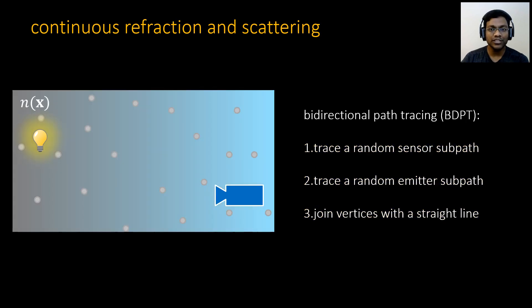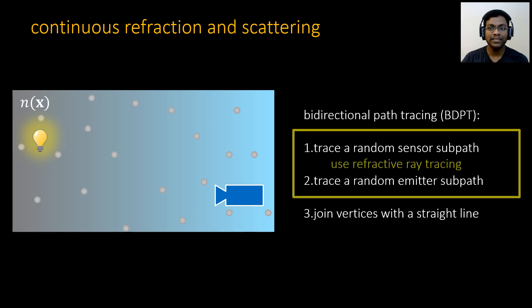If we have both continuous refraction and scattering, we can repeat the same steps and replace straight line ray tracing with refractive ray tracing. However, the problem is we cannot join the source and sensor sub-path vertices with a straight line. We have to find a curve to make these direct connections.